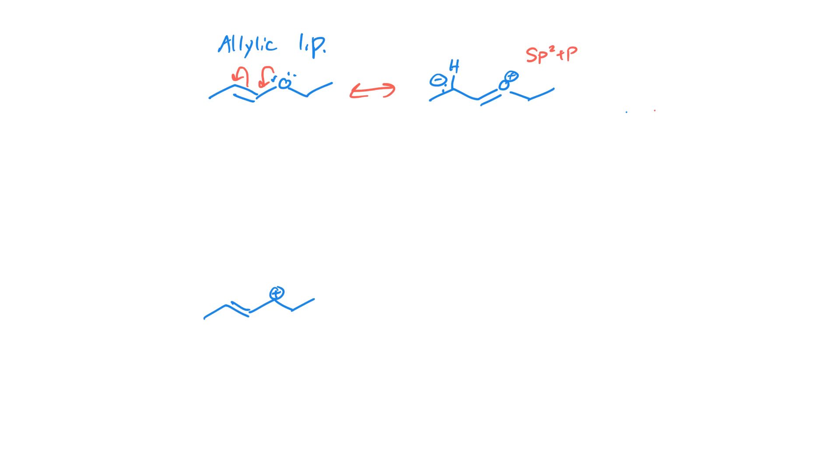We know it has a p orbital because it shares electrons with the adjacent carbon. Two overlapping p orbitals are required to make this pi bond. So that's the hybridization of the oxygen as it is right here. How about the oxygen before it underwent the resonance? What is its hybridization right here?